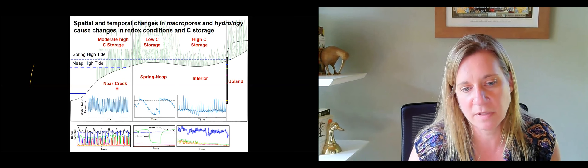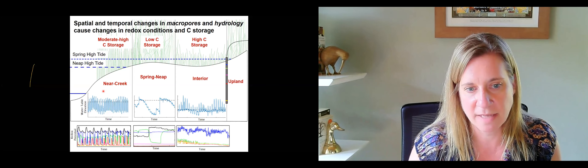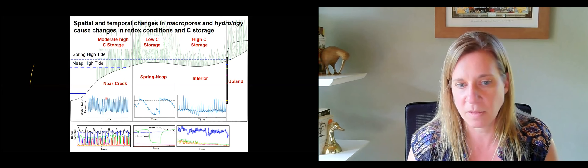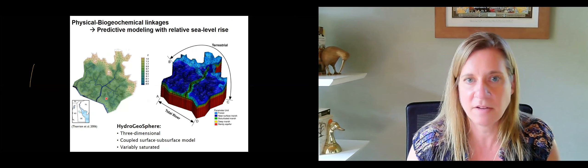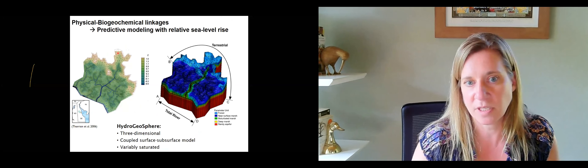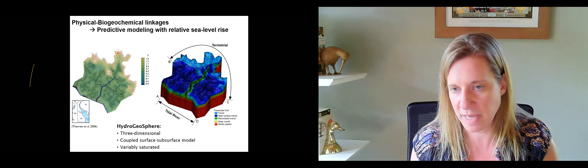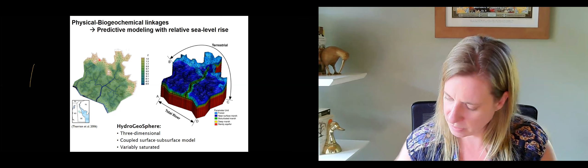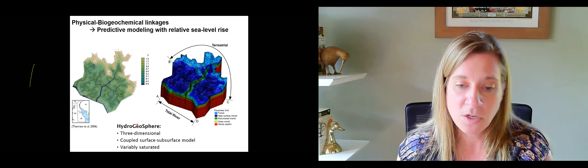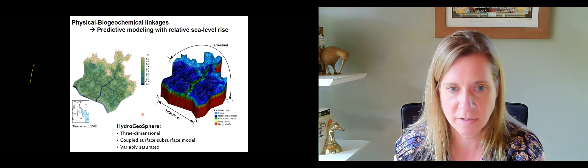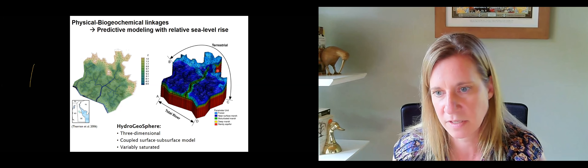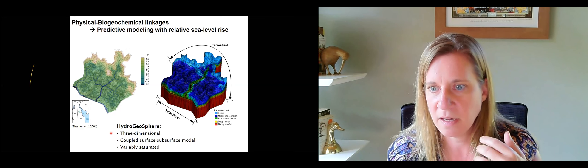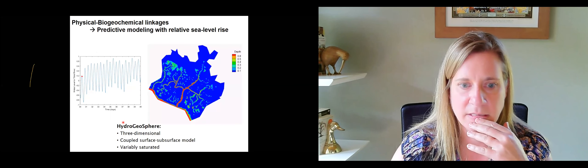The important thing is that we can tie carbon sequestration capacity to the hydrology — we can look at the physics of the system and make inferences about the biogeochemical functioning. That allows us to use hydrological models to predict how the carbon sequestration capacity of salt marshes could change with relative sea level rise. Julia built a three-dimensional, variably saturated, variable-density model with a surface mesh and subsurface mesh.